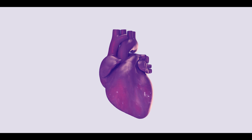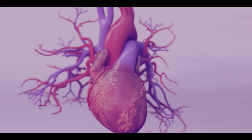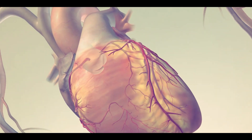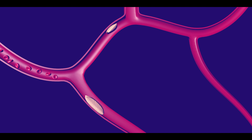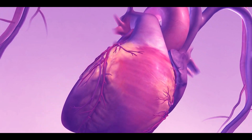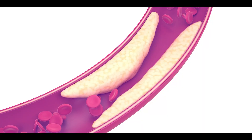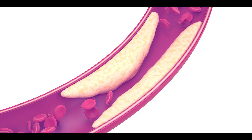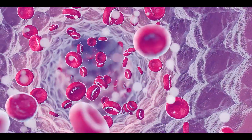Our heart is a muscular organ which needs a constant supply of blood to function properly. Coronary arteries are the blood vessels that supply oxygen and nutrients to the heart muscle. CAD is caused by a buildup of fatty material called plaque within the walls of these arteries. This process is known as atherosclerosis, and this buildup narrows the inside of the arteries, limiting the supply of oxygen-rich blood to the heart muscle.